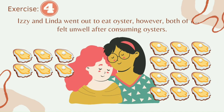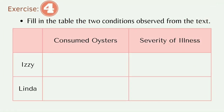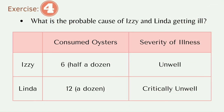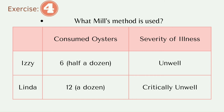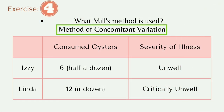Number four: Easy and Linda went out to eat oysters, but both felt unwell after consuming them. Easy ate half a dozen and felt slightly ill, while Linda ate a dozen and became critically ill. The two conditions are the number of oysters consumed and the severity of illness. The number of consumed oysters is connected to the severity of illness — more oysters led to greater illness. The method used is the Method of Concomitant Variation.